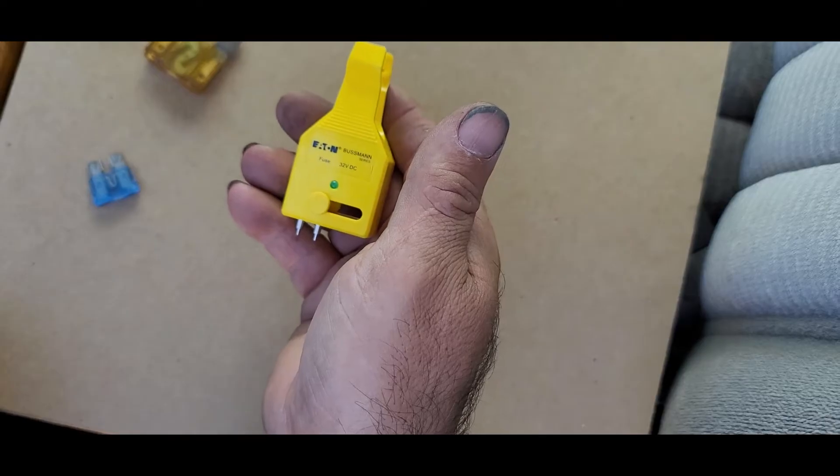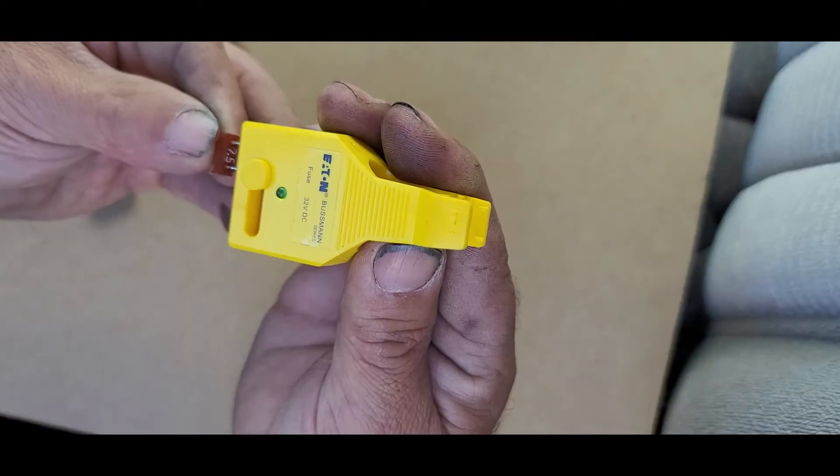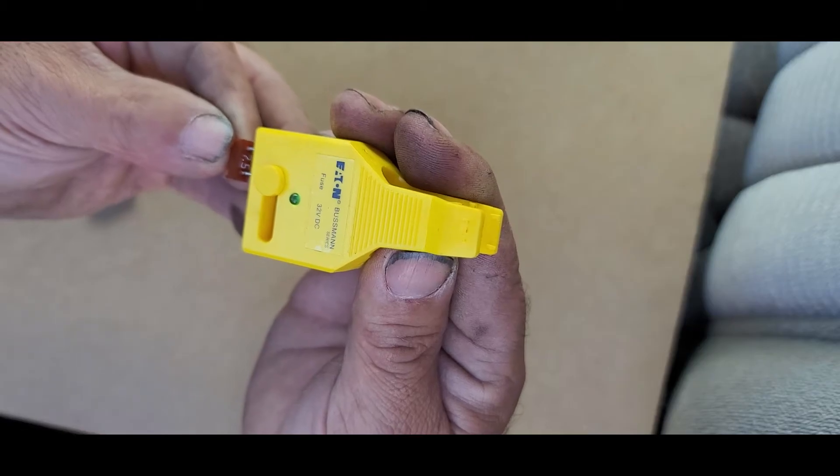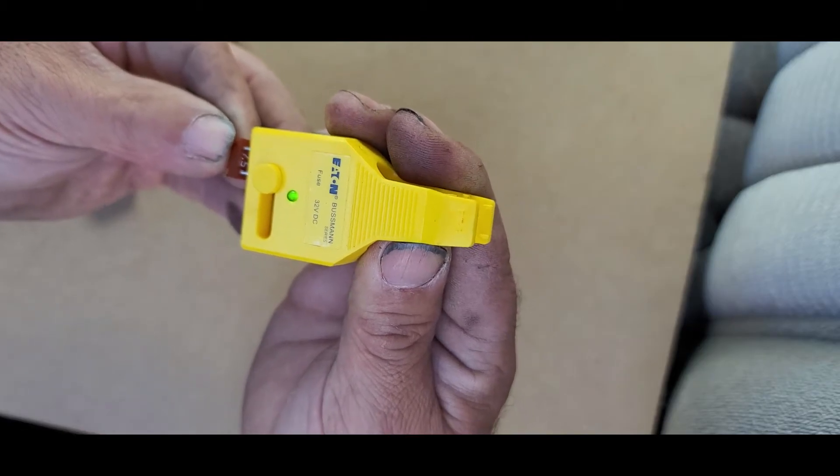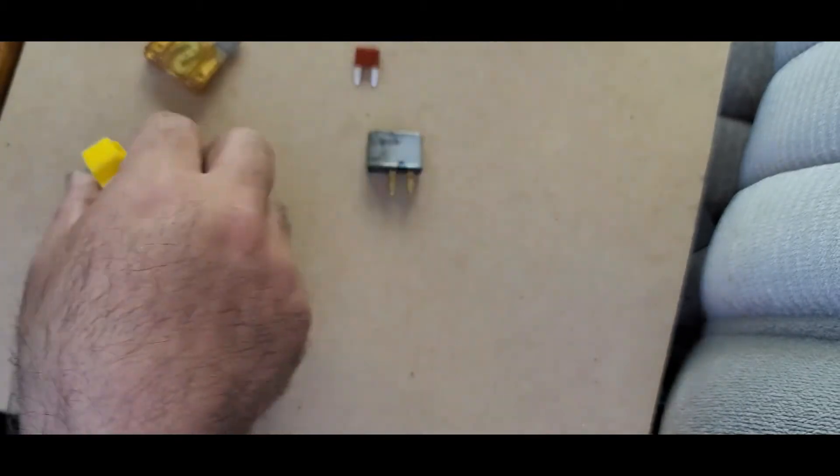In this video I'm going to show you this fuse tester. This is made by Eaton and this is how you test it. Just put it right here and you see the light, and that's for the small fuse.